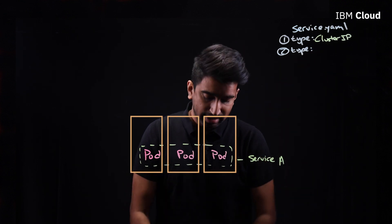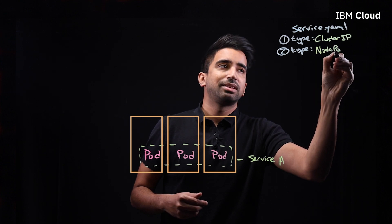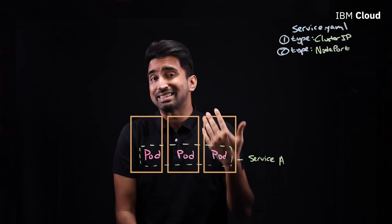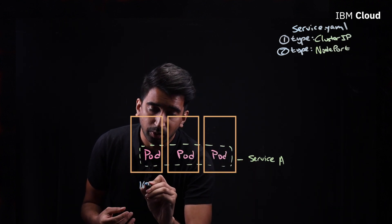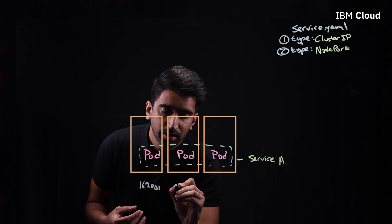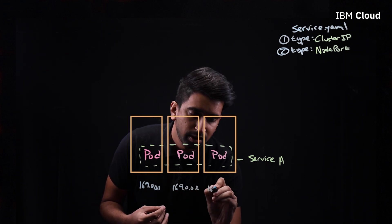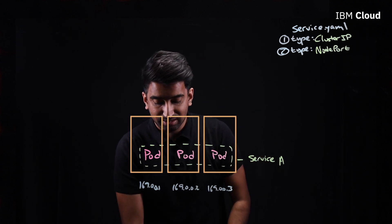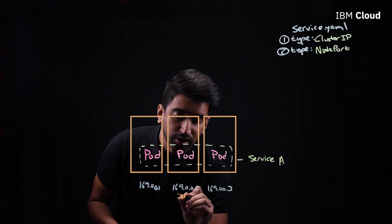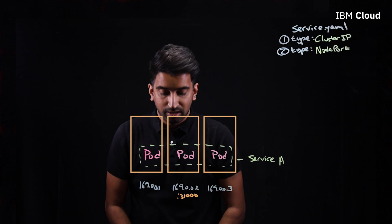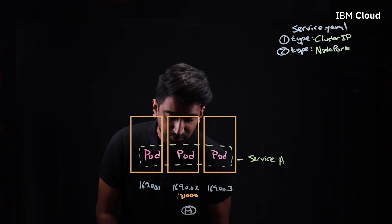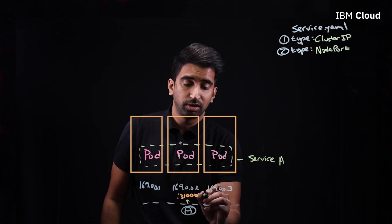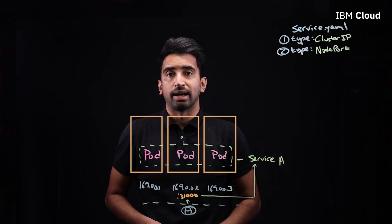I could also specify that type as NodePort. A NodePort is actually a lot like the name makes it sound. We've got three nodes in our cluster and each one of those nodes has a publicly accessible IP — something like 169.0.0.1, 169.0.0.2, and so on for the third one. What a NodePort will do is assign the same port — let's say 31,000 — to all three of those nodes. So for external access coming in from the internet, hitting that port on any one of these IP addresses routes directly to the service defined in that service.yaml.